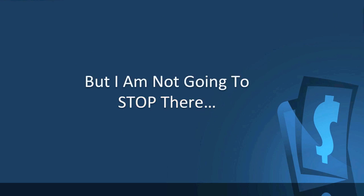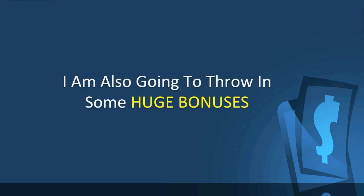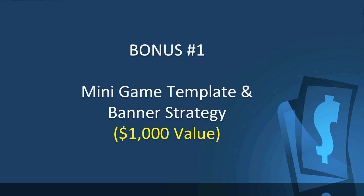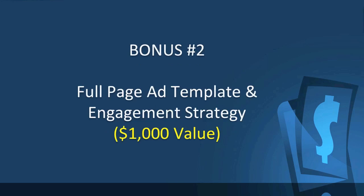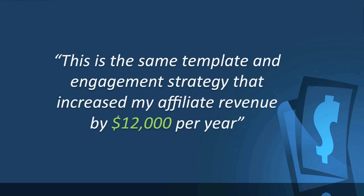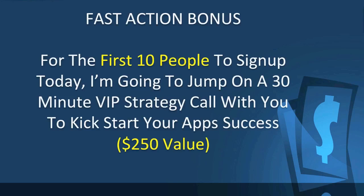Not only do you get my four-module online training and four group coaching calls with me, I'm also throwing in some huge bonuses. Bonus number one is my mini-game template and banner strategy — the same template and strategy that increased my banner revenue by $11,000 per year. Bonus number two is my full-page ad template and engagement strategy — the same strategy that increased my affiliate revenue by $12,000 per year. There's also a fast action bonus: for the first 10 people to sign up today, I'm going to jump on a 30-minute VIP strategy call with you to kickstart your app's success.